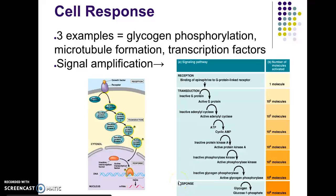We're on the third phase, which is going to be cell response. The important thing to know here is that ultimately a signal transduction pathway can lead to regulation of one or more different cell activities. You can either regulate protein synthesis, which can happen in the nucleus, or you can regulate the actual activity of a protein, which would happen more so in the cytoplasm.